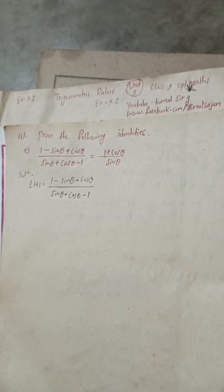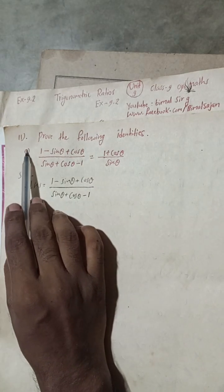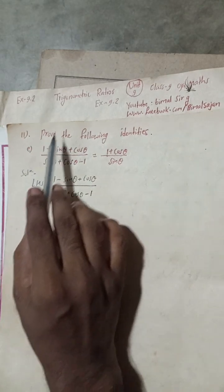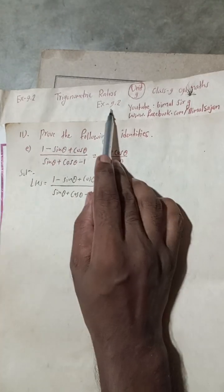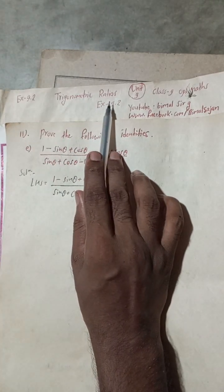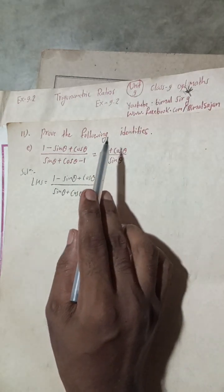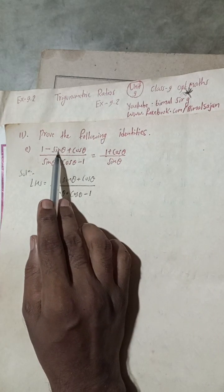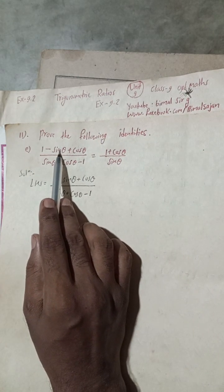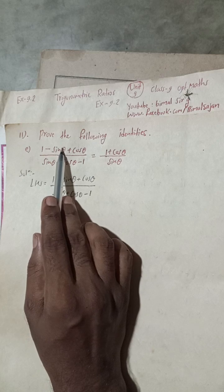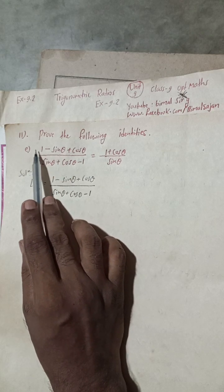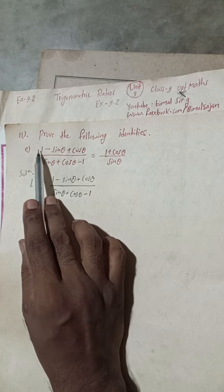Hi everybody, welcome back to Bimalsarji YouTube channel. This is question number 11E of exercise 9.2, trigonometric ratios, class 9 optional mathematics. I have already uploaded 13ab, 12ab, 11ab, c, d and now E I am going to solve.